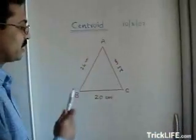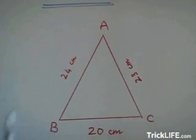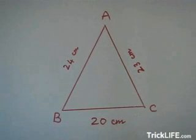we have here a triangle ABC in which AB is 24 cm, BC is 20 cm and AC is 23 cm.